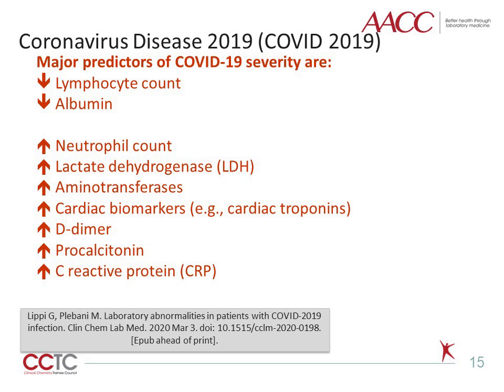According to a recent literature review, the most frequent laboratory tests that predict progression towards severe forms of COVID-19 include decreased values of hemoglobin and albumin, as well as increased values of neutrophils, LDH, aminotransferases, cardiac biomarkers (especially cardiac troponins), D-dimer, procalcitonin, and C-reactive protein.